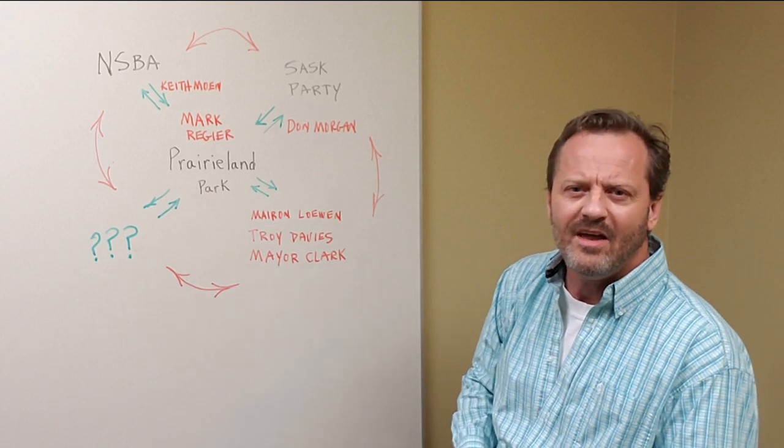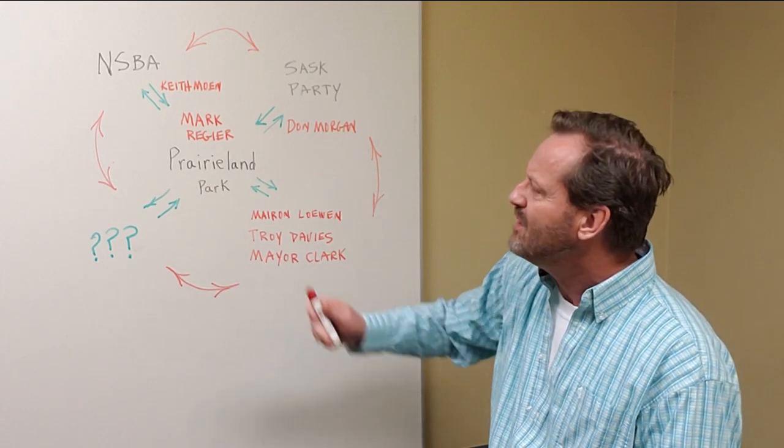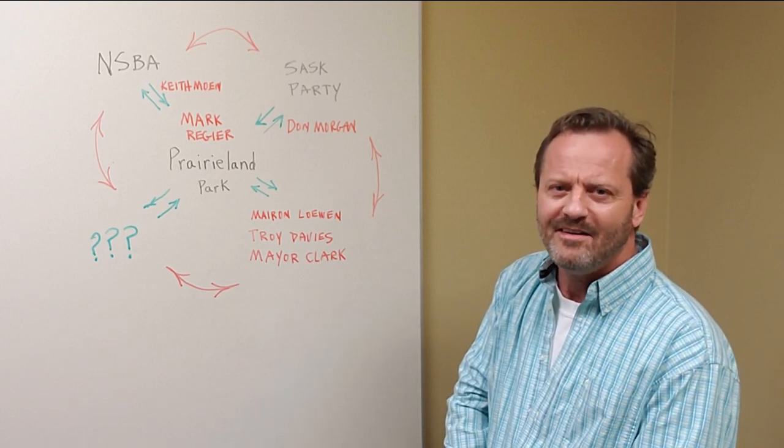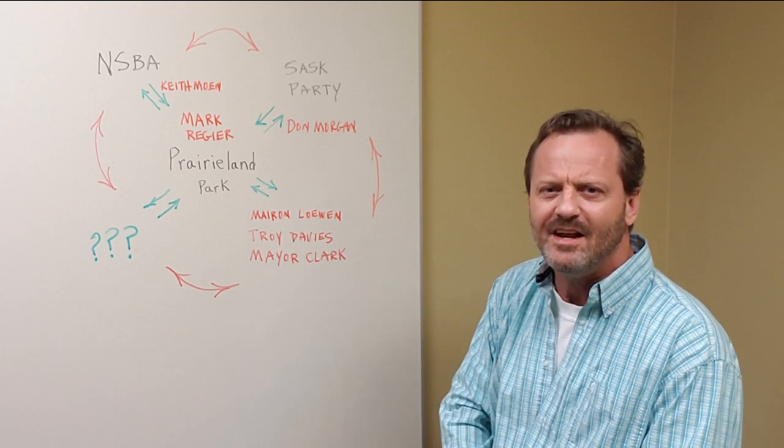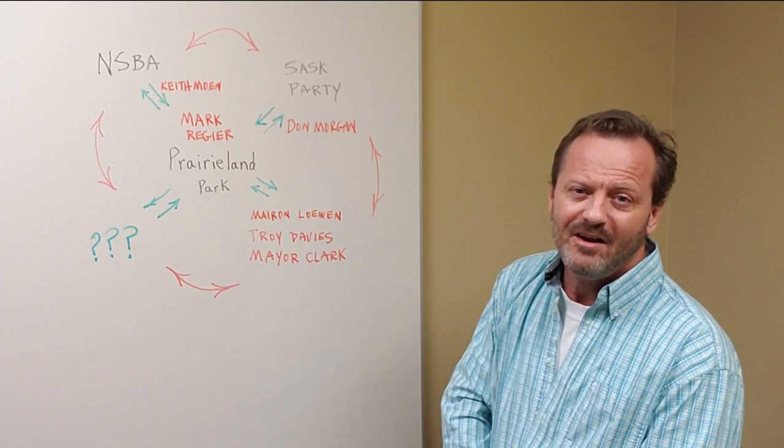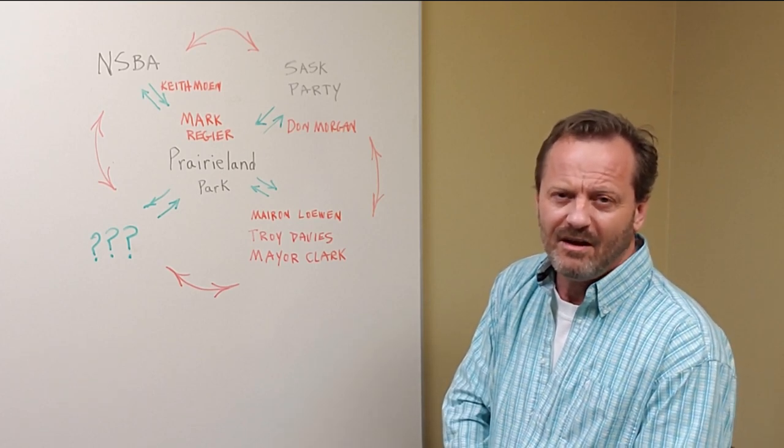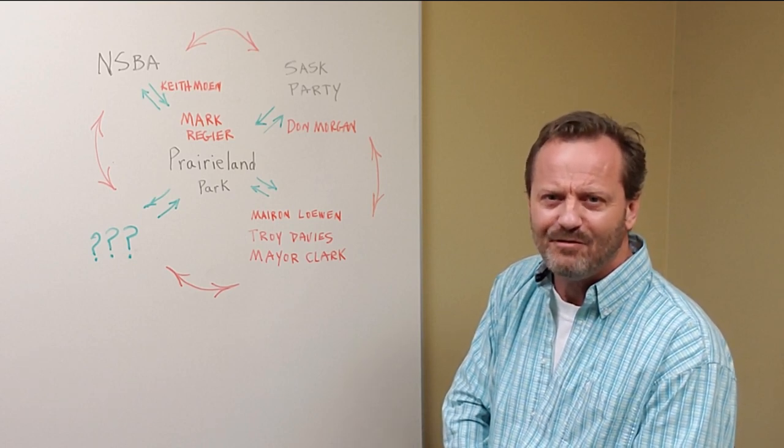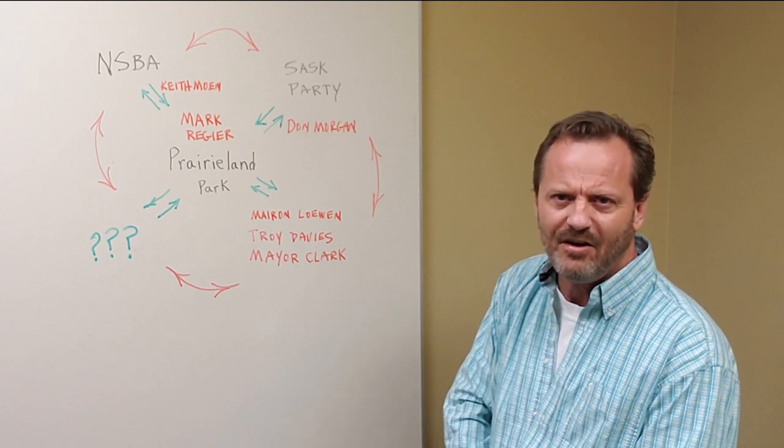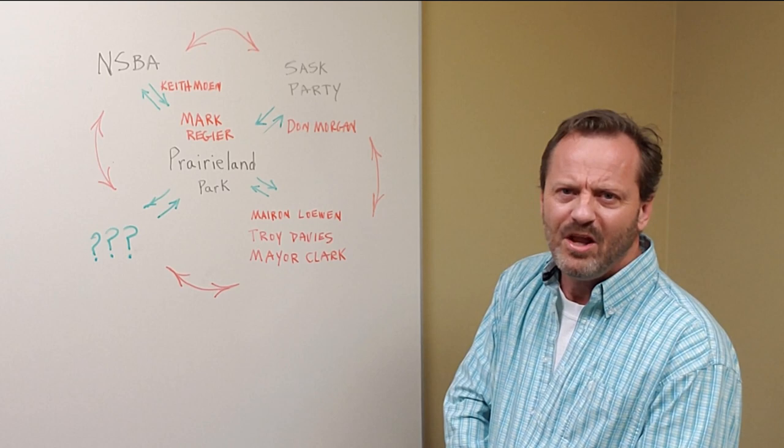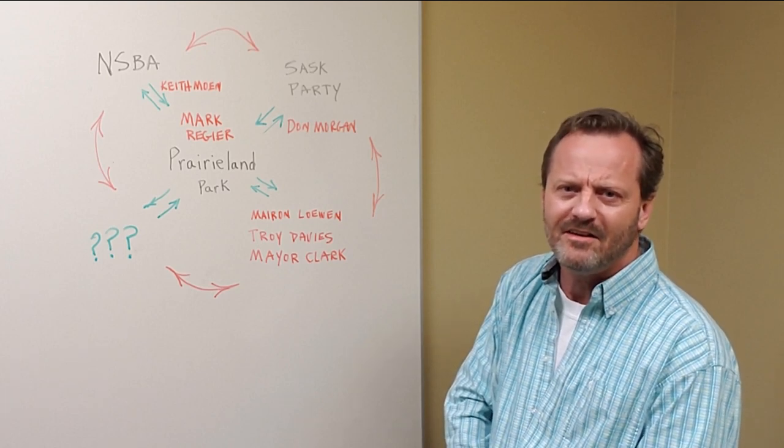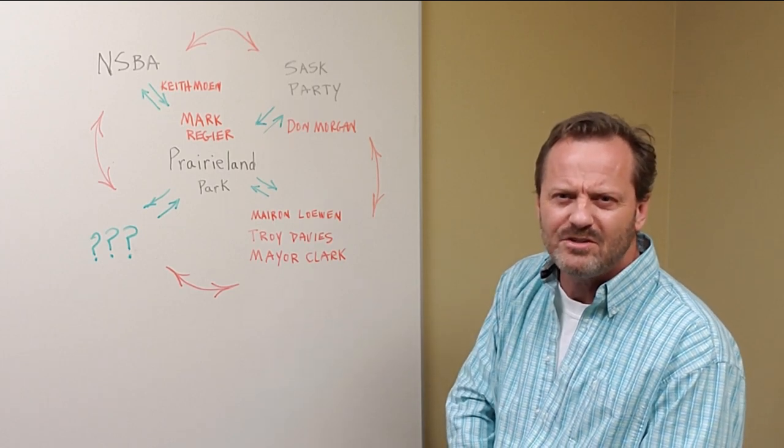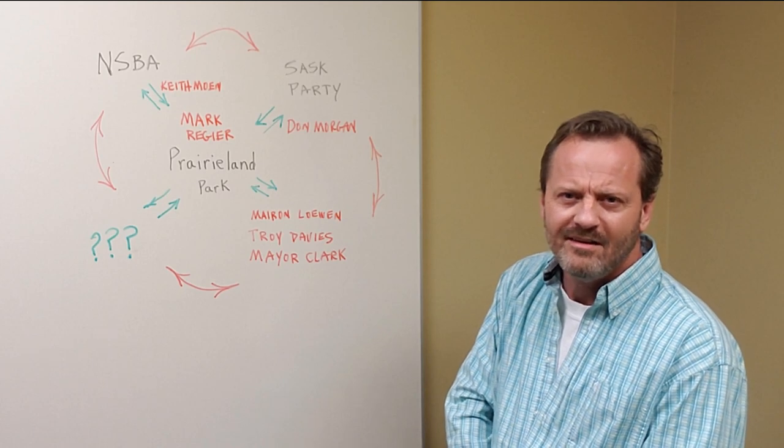Then you look at the NSBA—they've got to be fighting for all these business interests. But Keith Moen and another lady happen to be on the NSBA board and they're also on Prairieland's board. Keith Moen gets paid by the NSBA to protect business interests, and yet he's voting for Prairieland Park on things that put them in competition directly with business outside Prairieland Park. How is that fair? That is hugely unethical because his full-time job is supposed to be helping business, not hurting it so that he gets a cushy job being on the board of Prairieland Park. He gets to vote on really important stuff—those things that he votes on are actually hurting and killing business.